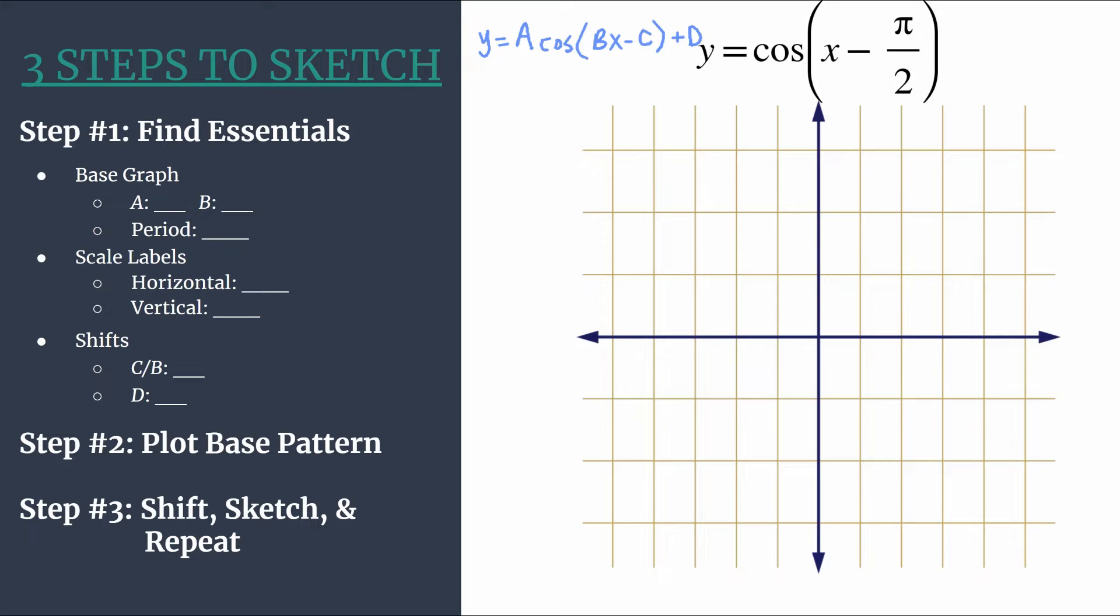We don't need to factor out b because b is just one. So we can jump in with step one. Let's find our essentials.